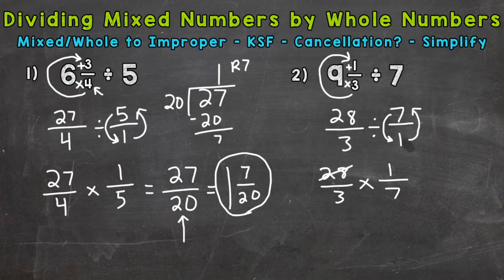28 divided by 7 is 4. 7 divided by 7 is 1. Let's multiply straight across because now the only common factor is 1. So we are done with cancellation. 4 times 1 is 4. And 3 times 1 is 3. So that is our answer.